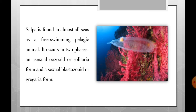The asexual form is called ozoid and since it is single, it is called the solitaria form. The sexual form is called blastozoid and since it forms a chain, it is called the gregaria form. So SALPA occurs in two phases: asexual ozoid and sexual blastozoid.